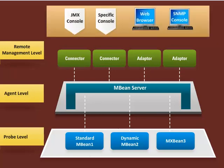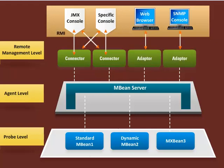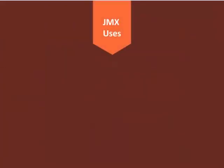A connector provides full remote access to the MBean server API using various communications like Remote Method Invocation, or RMI. Whereas an adapter adapts the API to another protocol like SNMP, or to a web-based GUI like HTTP. The typical uses of JMX technology include the following.